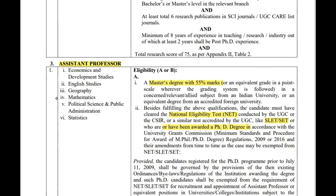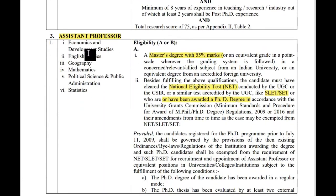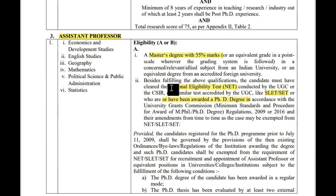Now let's see the qualifications for Assistant Professor. For all subjects, the eligibility is: a Master's degree with at least 55% marks, along with a nationalized eligibility test (NET) or SLET, or a PhD degree.